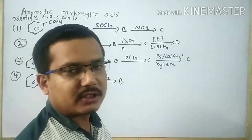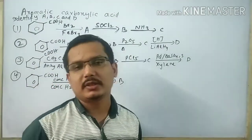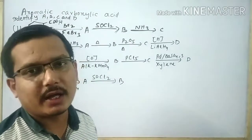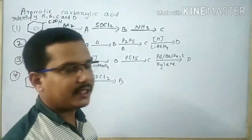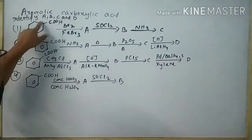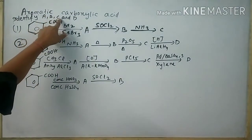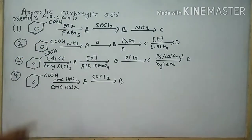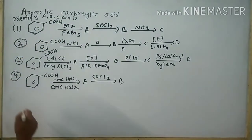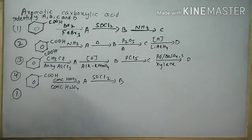Now I will discuss about the conversions related to the aromatic carboxylic acid. Identify A, B, C and D. These are the following questions. I will first do the first question.